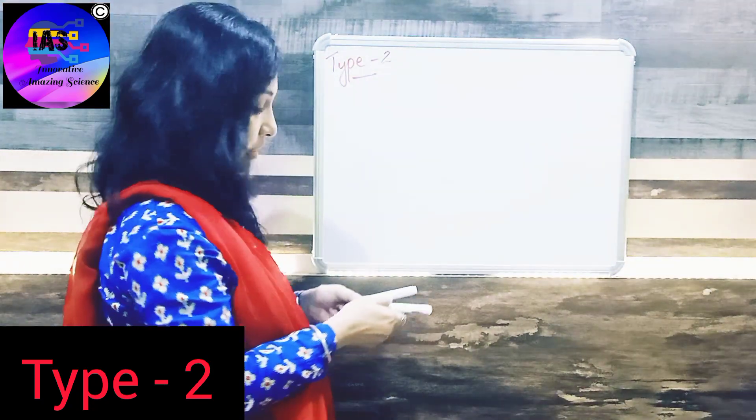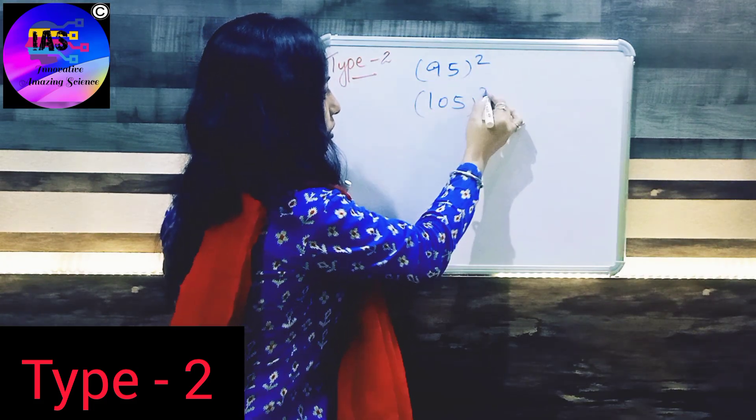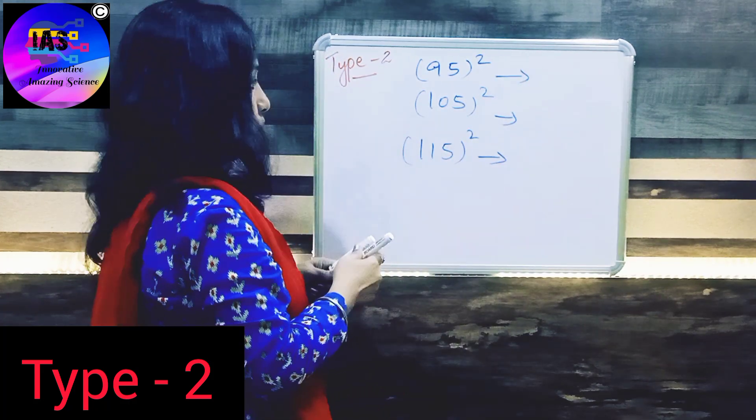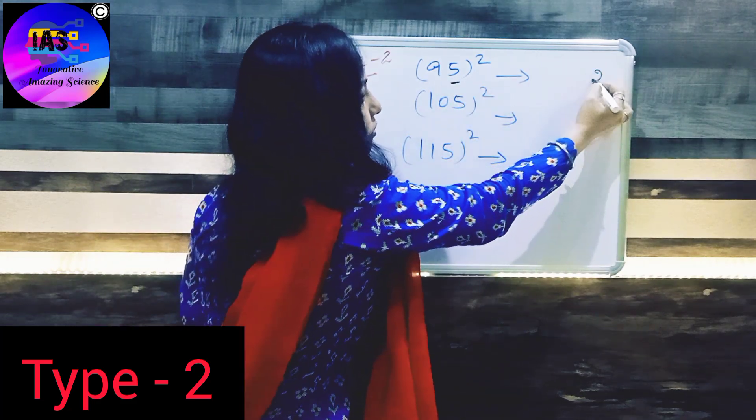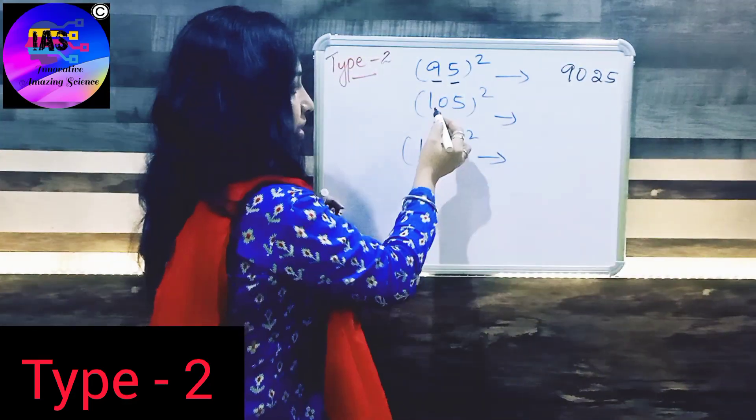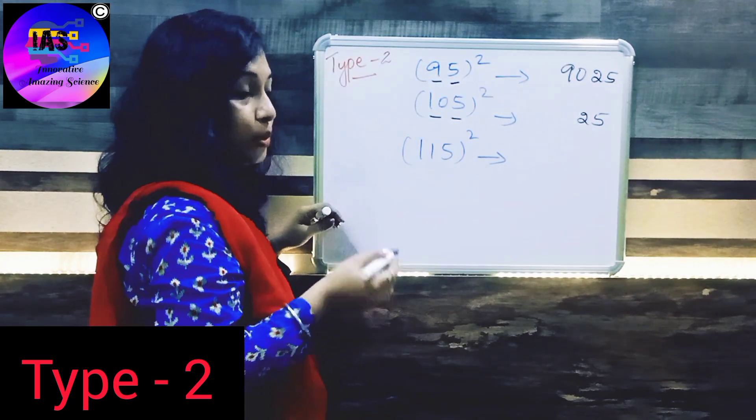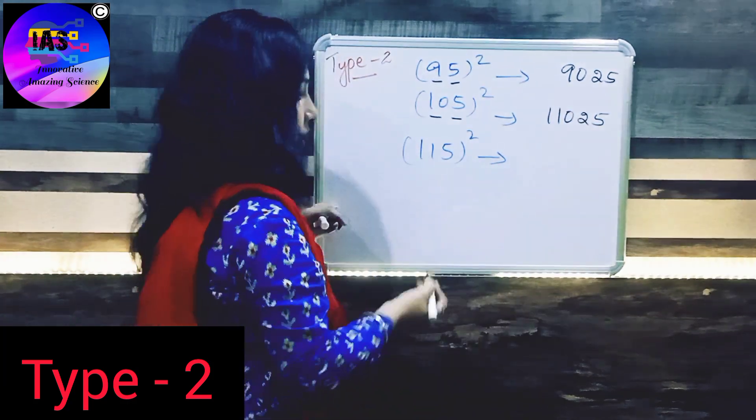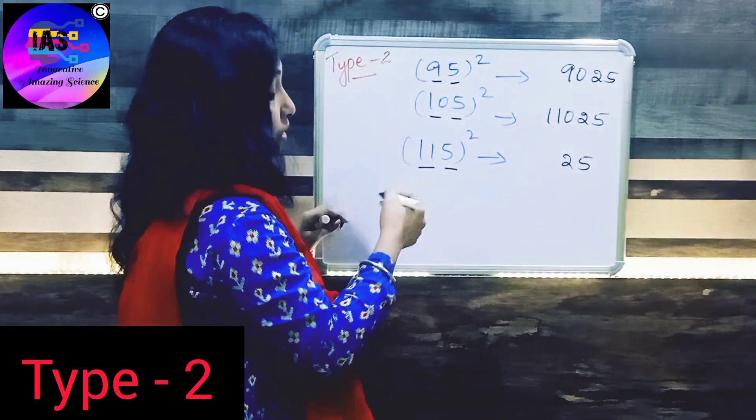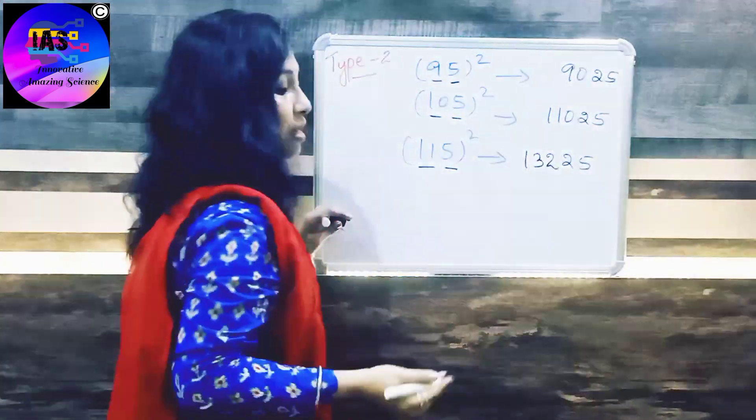So let's see a few other numbers. Let me take 95 square, 105 square, and 115 square. We know that 5 square is 25, and 9's next number is 10, so 9 into 10 is 90. Next number is 105 square - 5 square is 25, and 10's next number is 11, so 10 into 11 is 110. And here we have 115 square. 5 square is 25, and here we have 11. The next number of 11 is 12, so 11 into 12 is 132. So here is the answer.